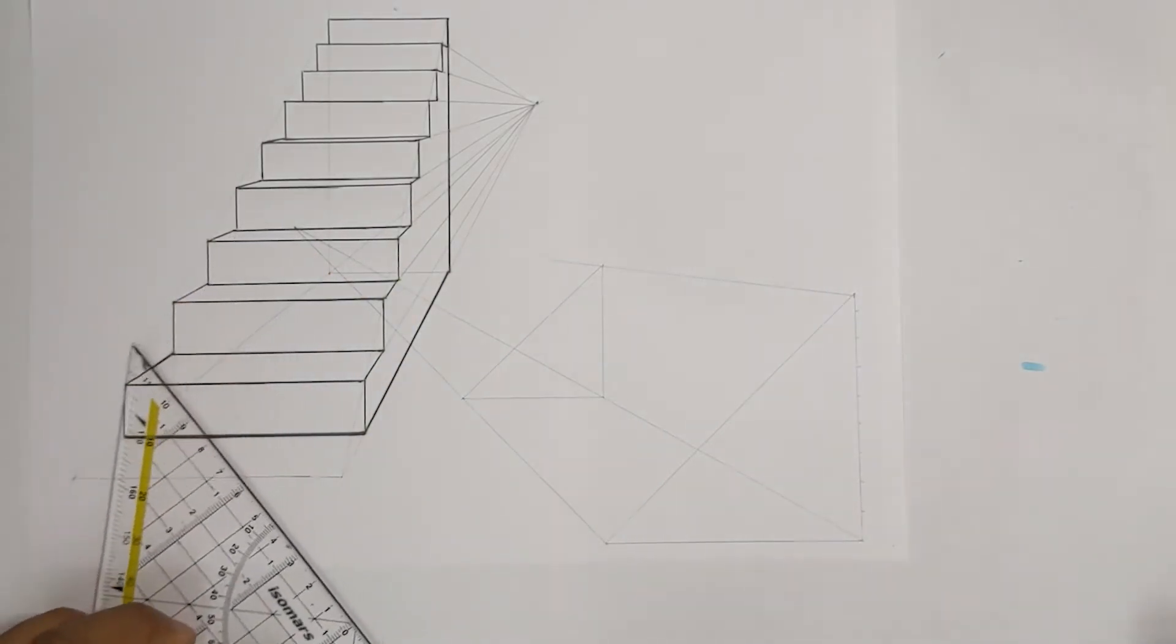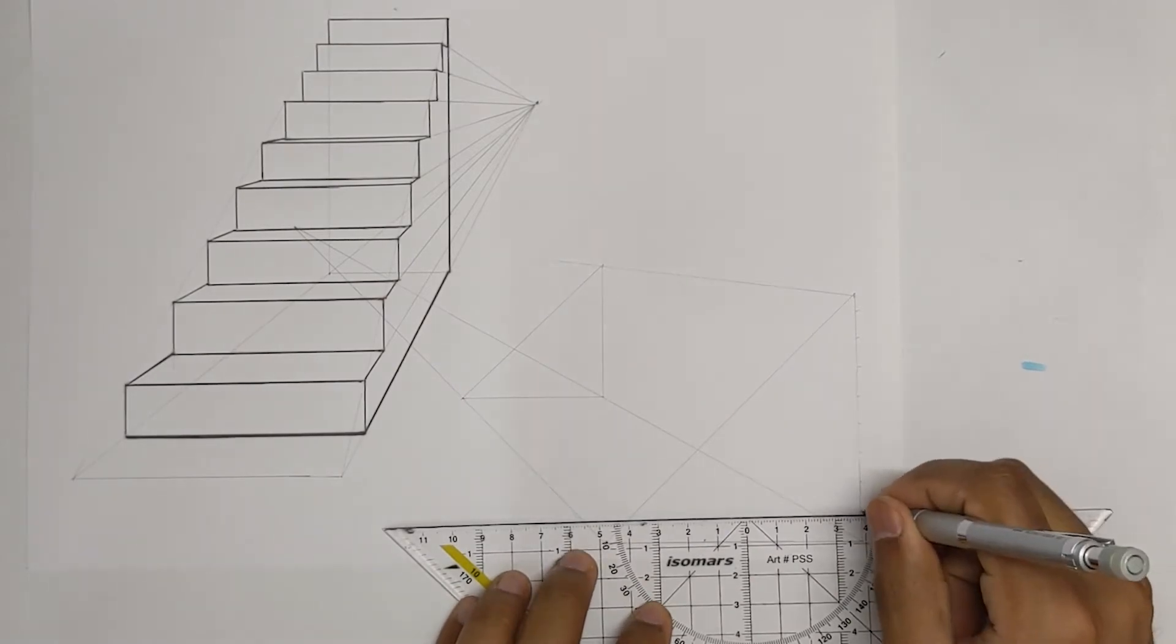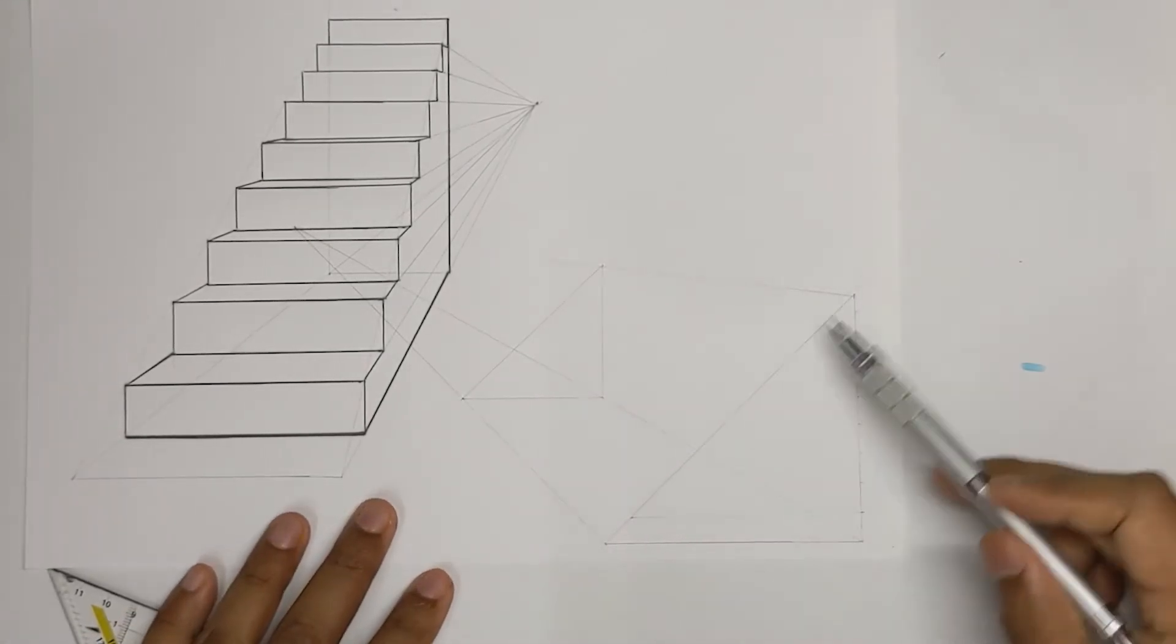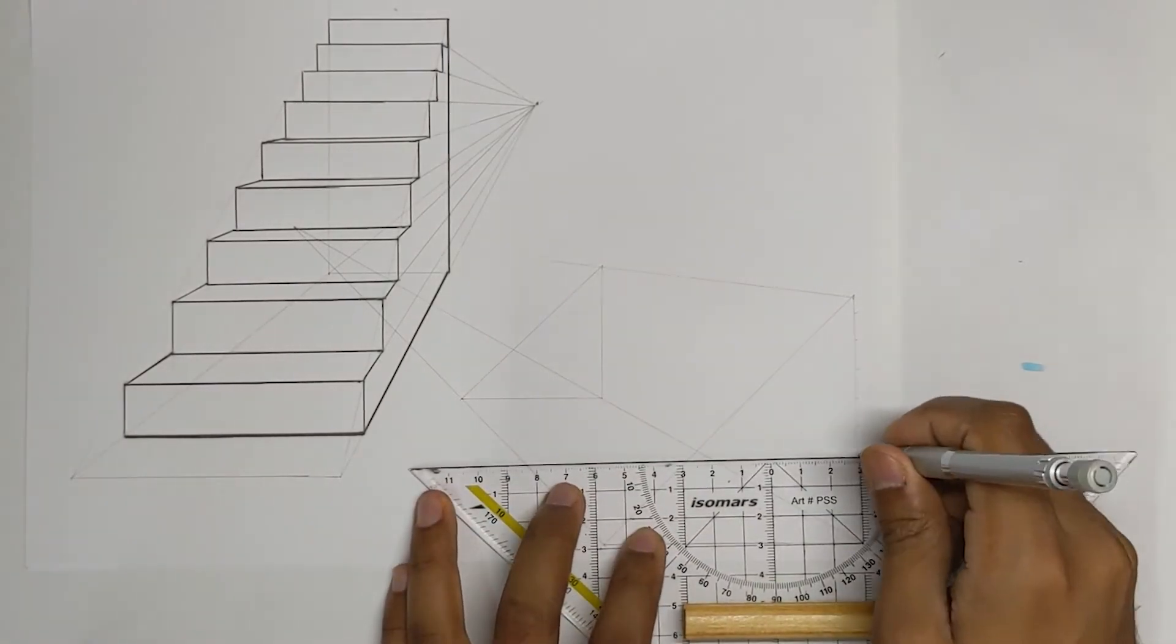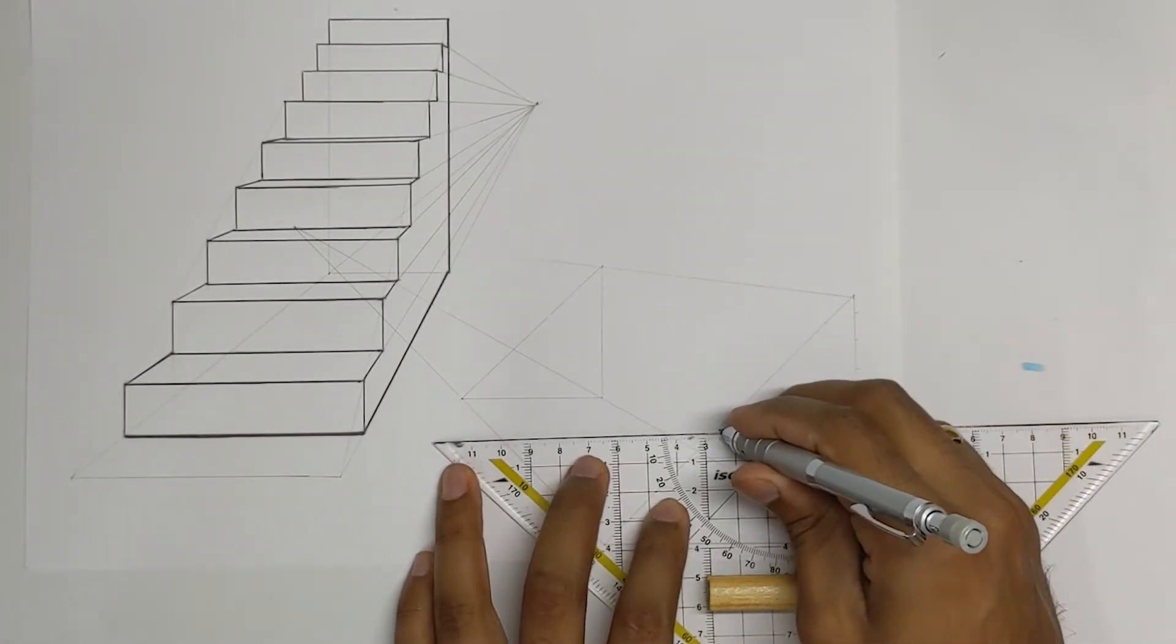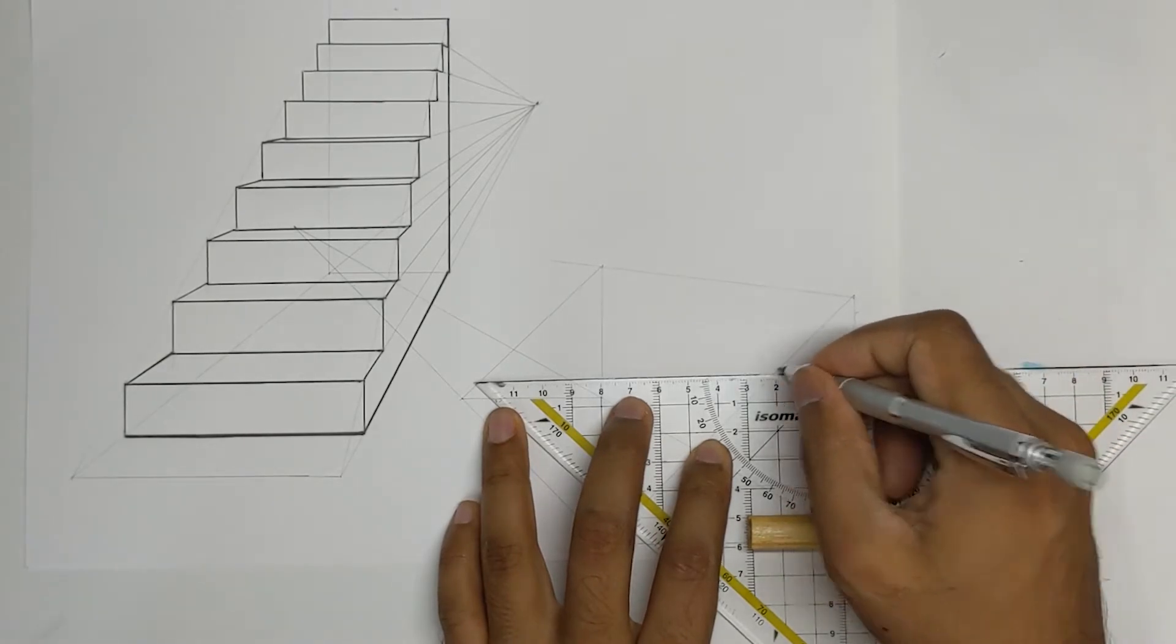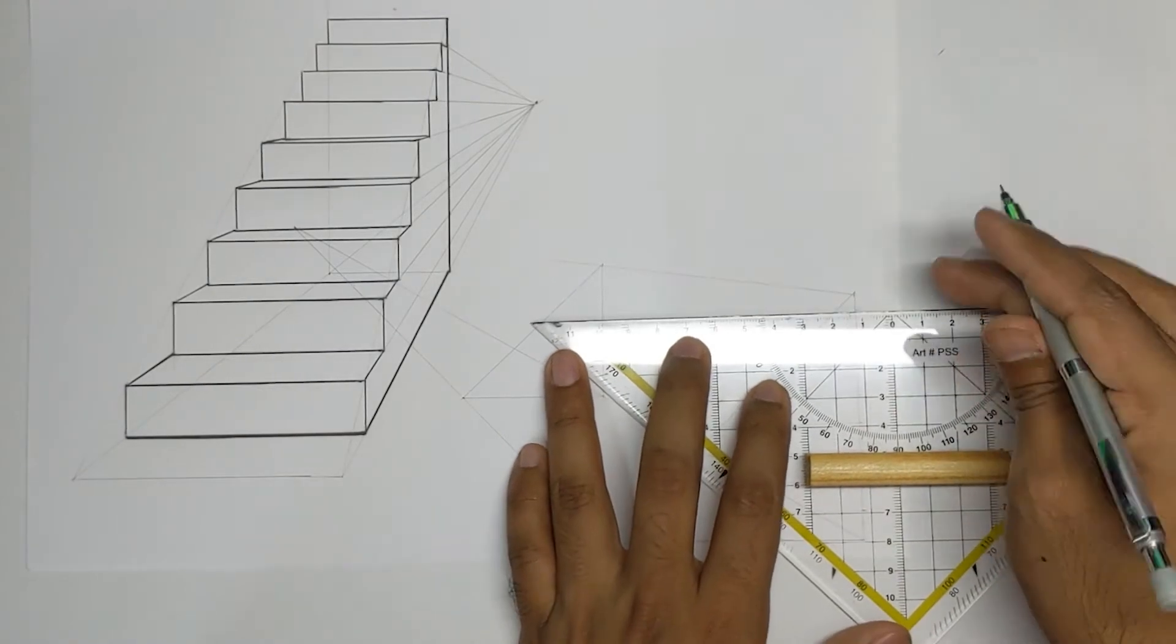Okay great so now take these division lines and run a horizontal line until it meets with the wedge line. Make sure to keep these lines perfectly horizontal. Otherwise you are going to end up having perspective errors. Which is okay there is no need to be 100% perfect.